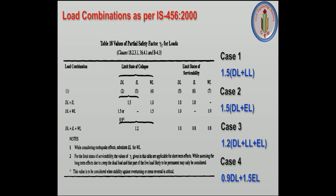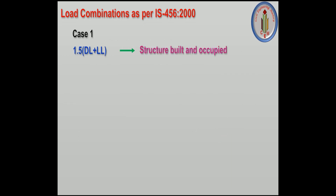Now let's discuss why we get factors like 1.2 and 0.9. The standard partial safety factor is 1.5. Case 1 — 1.5 times Dead Load plus Live Load — applies when the structure is built and occupied. The dead load represents the frame of the structure and the live load accounts for occupancy. The factor is 1.5.